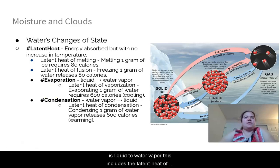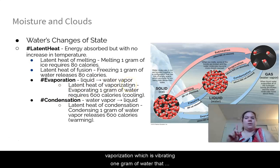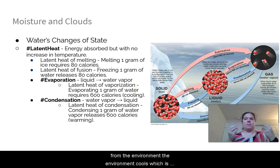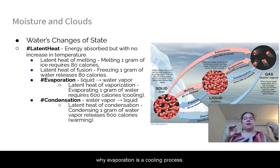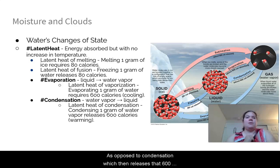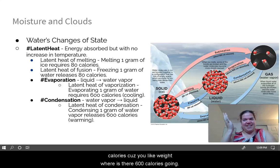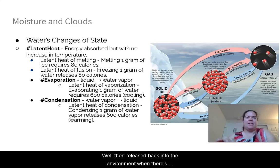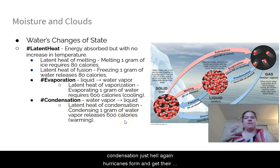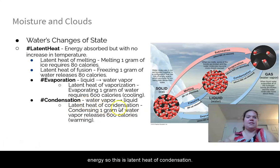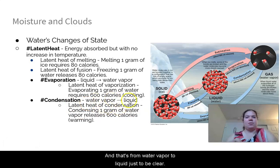Two opposites are evaporation and condensation. Evaporation — liquid to water vapor — includes the latent heat of vaporization, which requires 600 calories from the environment per gram of water. As it pulls energy from the environment, the environment cools, which is why evaporation is a cooling process. Condensation releases those 600 calories back into the environment — this is how hurricanes form and get their energy. The latent heat of condensation takes water vapor back to liquid.